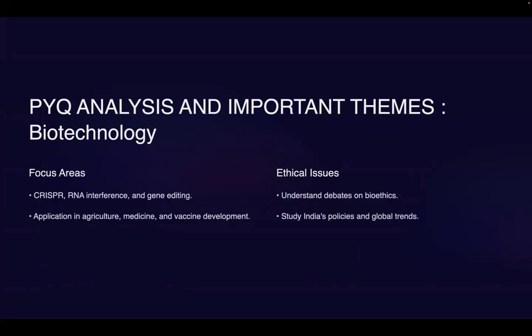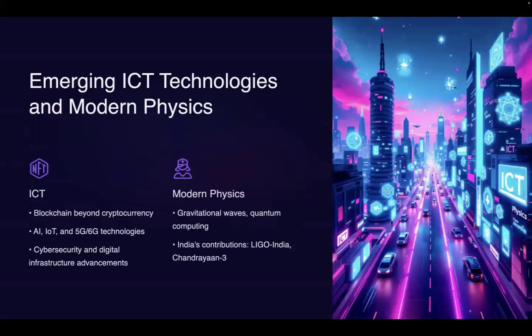The next step is to cover PYQ themes from the last seven years. The themes are getting repeated and are extremely important in science. In biotechnology, technologies like CRISPR, RNA, DNA, and gene editing are very important — along with their importance in agriculture, medicine, vaccine development, and the ethical issues associated with them. In ICT, they are asking about blockchain, cryptocurrency, AI, internet of things, 5G, 6G technologies, cybersecurity, and digital infrastructure — these have been key areas for the last seven years.